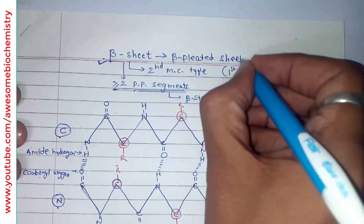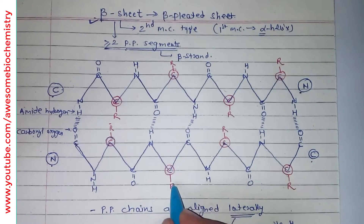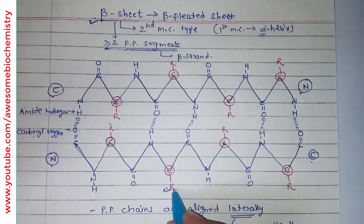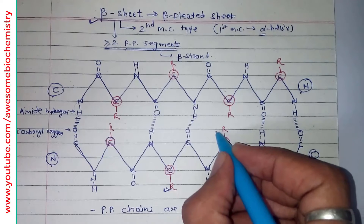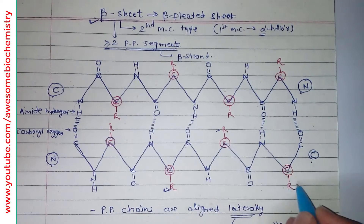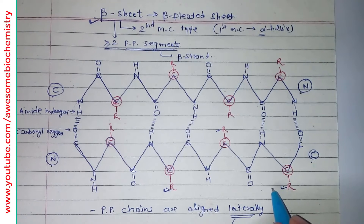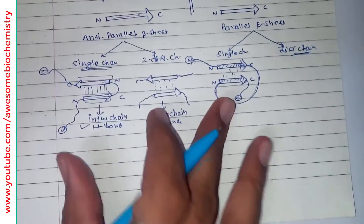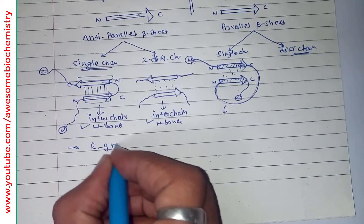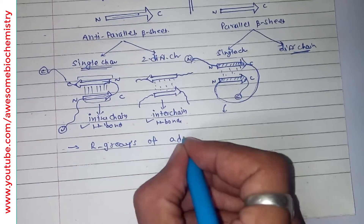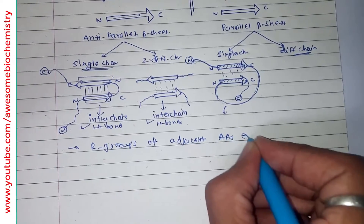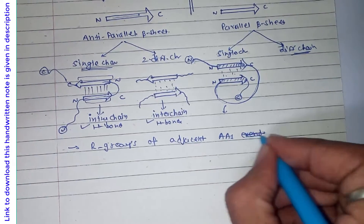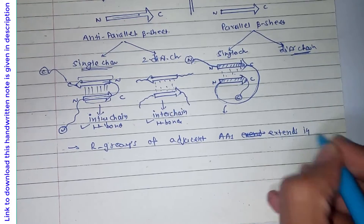One more thing to note: the R groups of adjacent amino acids extend in opposite directions. This alpha carbon's side chain R group is on one side, its immediate next alpha carbon's R group is on the opposite side, and so on. So R groups of adjacent amino acids extend in opposite sides.